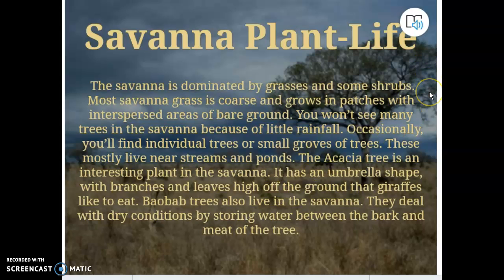Savanna vegetation is mostly grasses, some shrubs and small bushes, and a few trees like the acacia tree. Most savanna grass is coarse and grows in patches. Because they don't get enough rain, there aren't many trees — trees are huge plants requiring lots of water. One exception is the acacia tree, which has adapted to live there. It has massive thorns and is a favorite food of giraffes. We'll get into some crazy adaptations the acacia tree has later on.